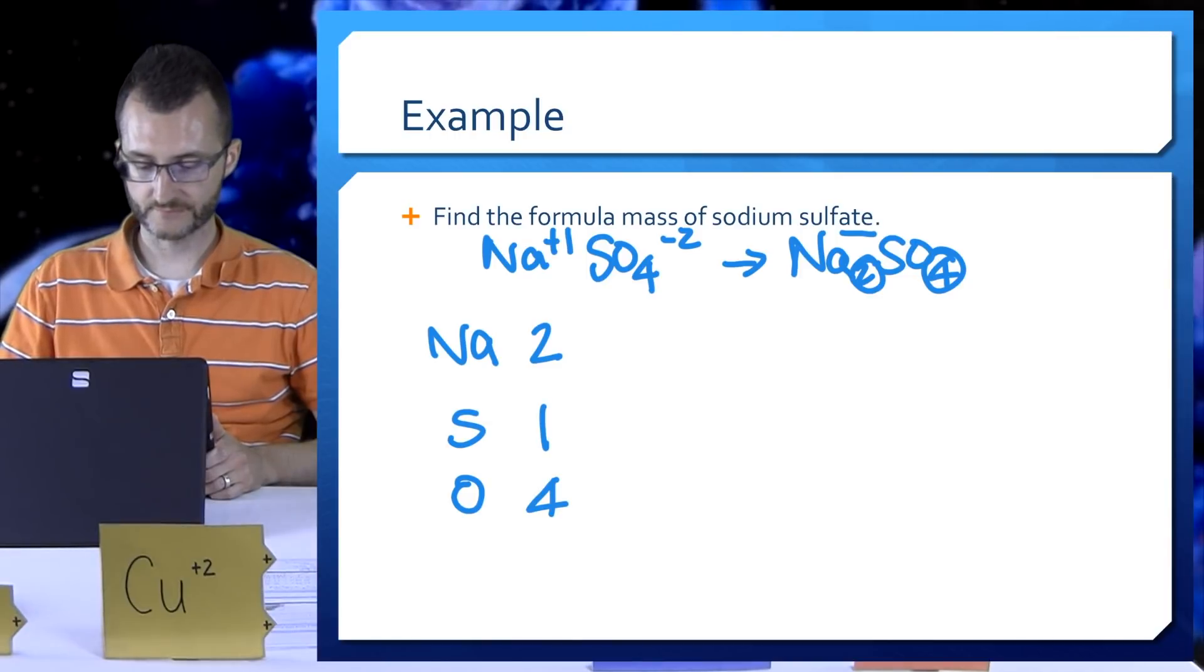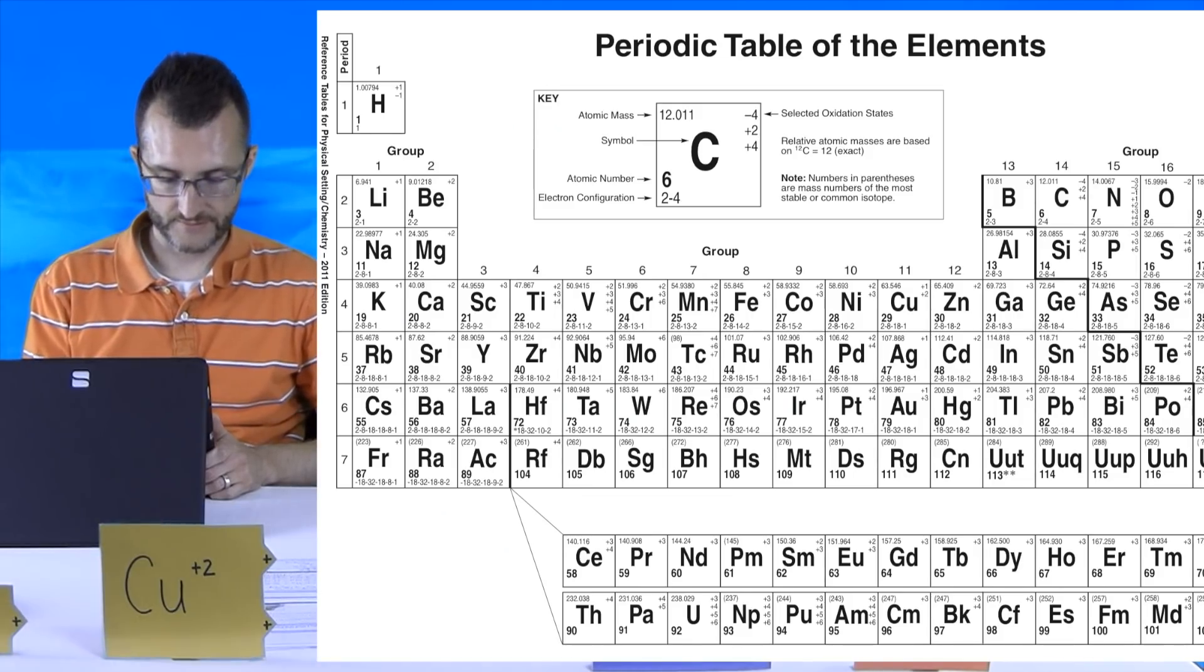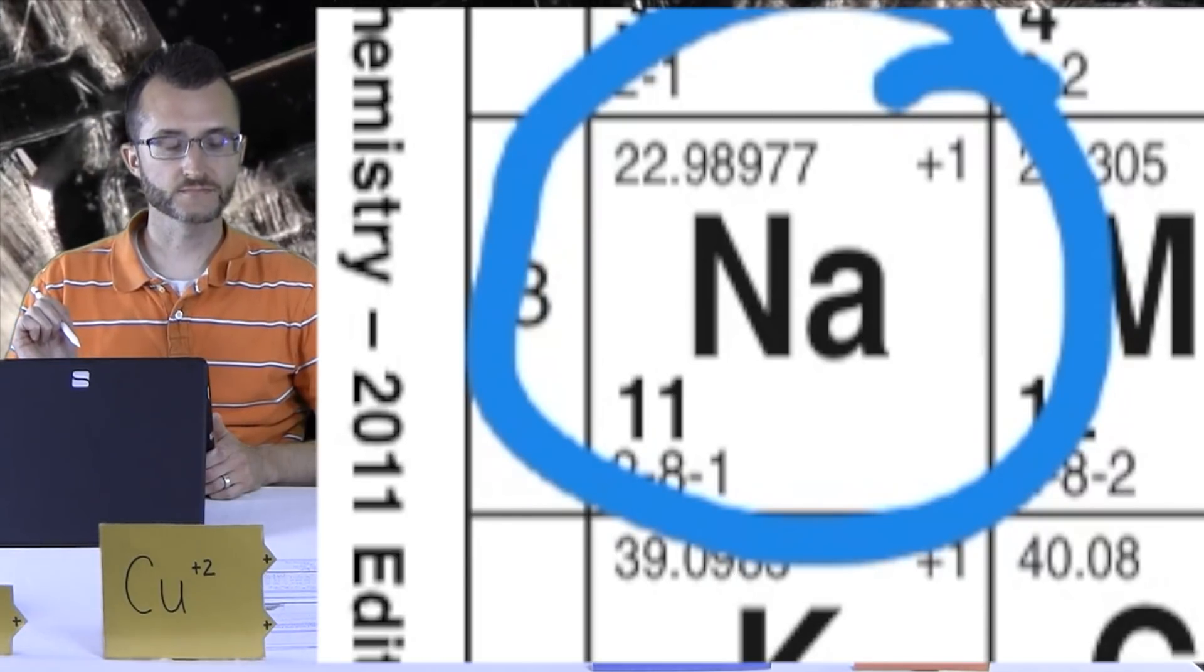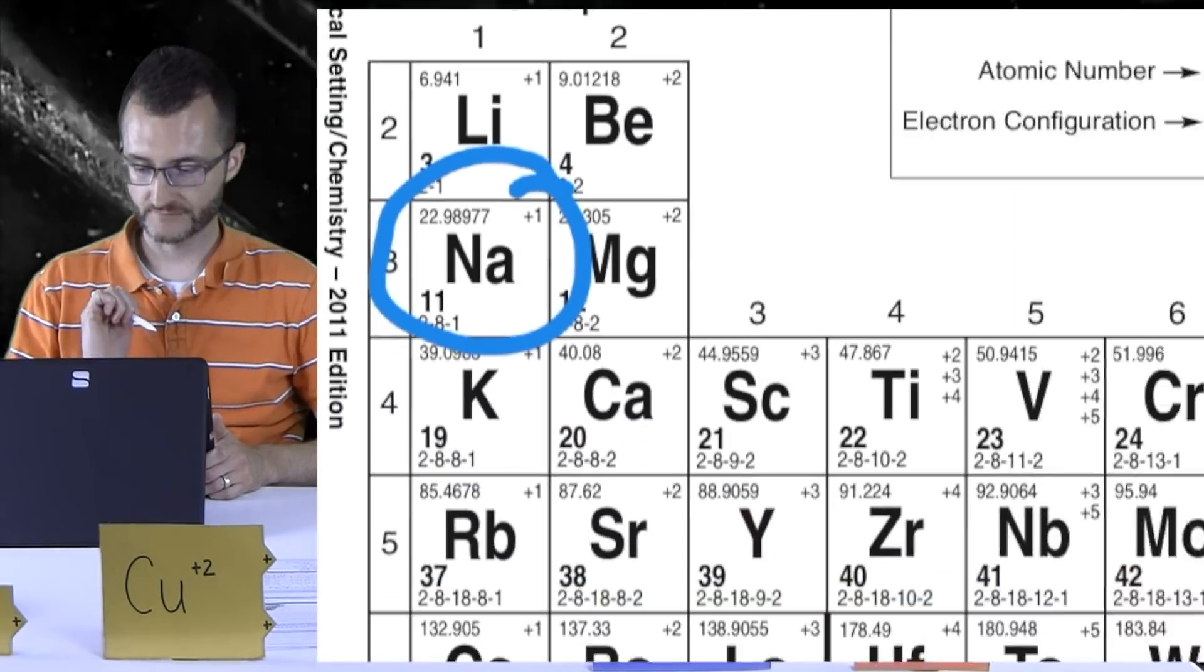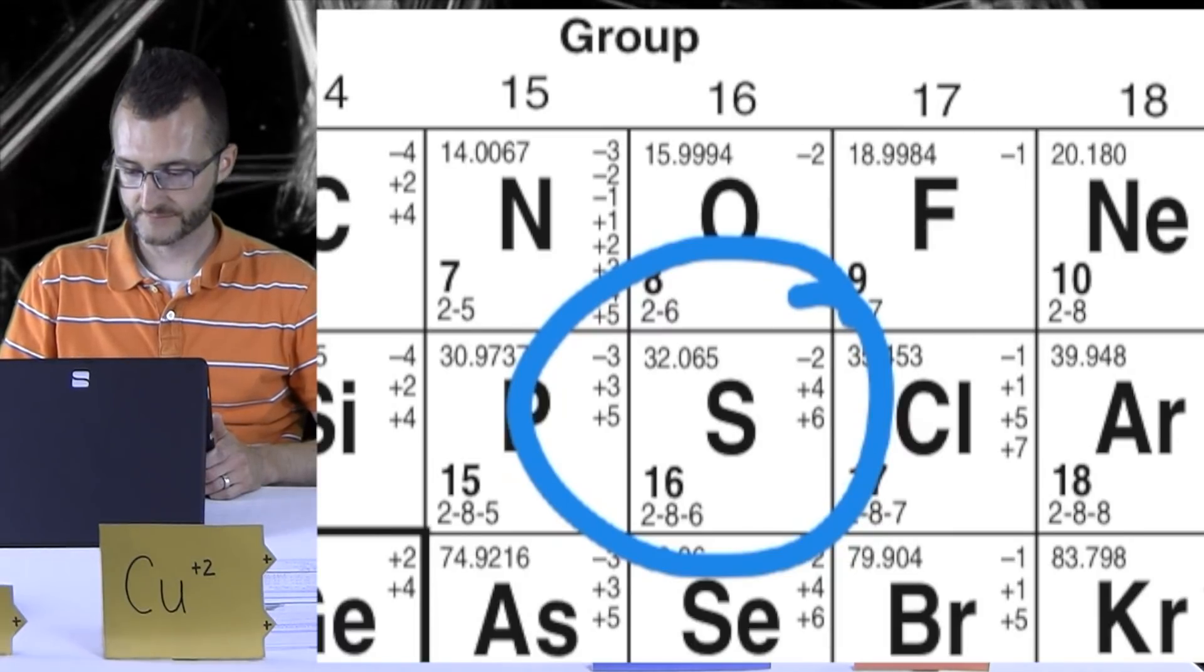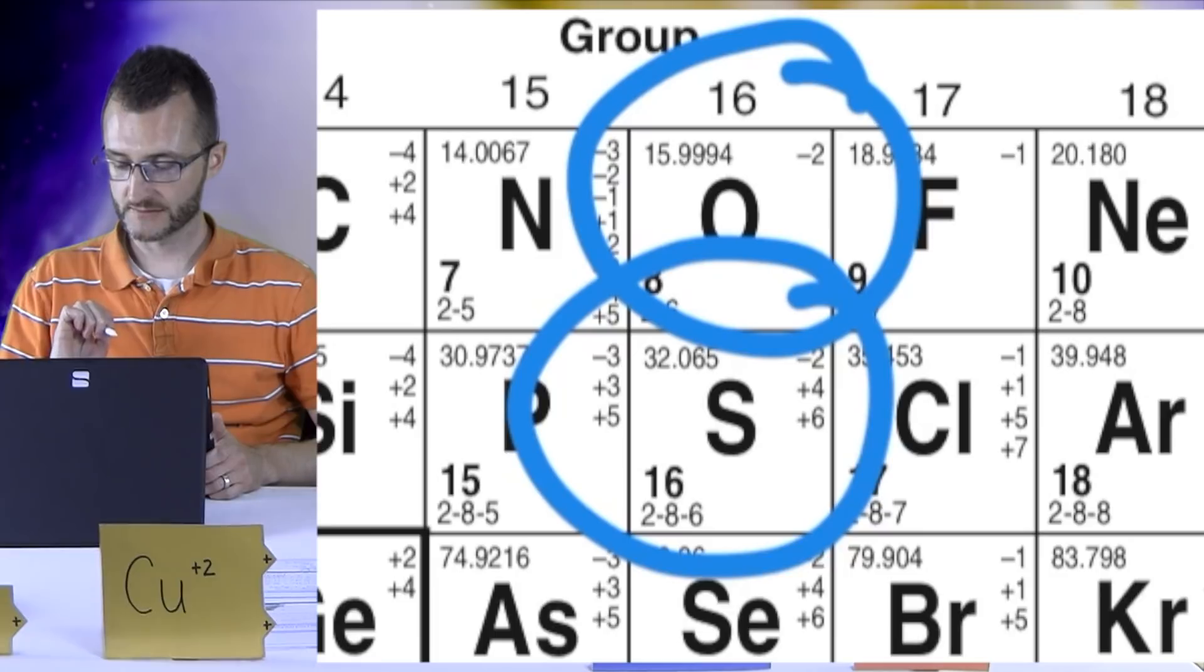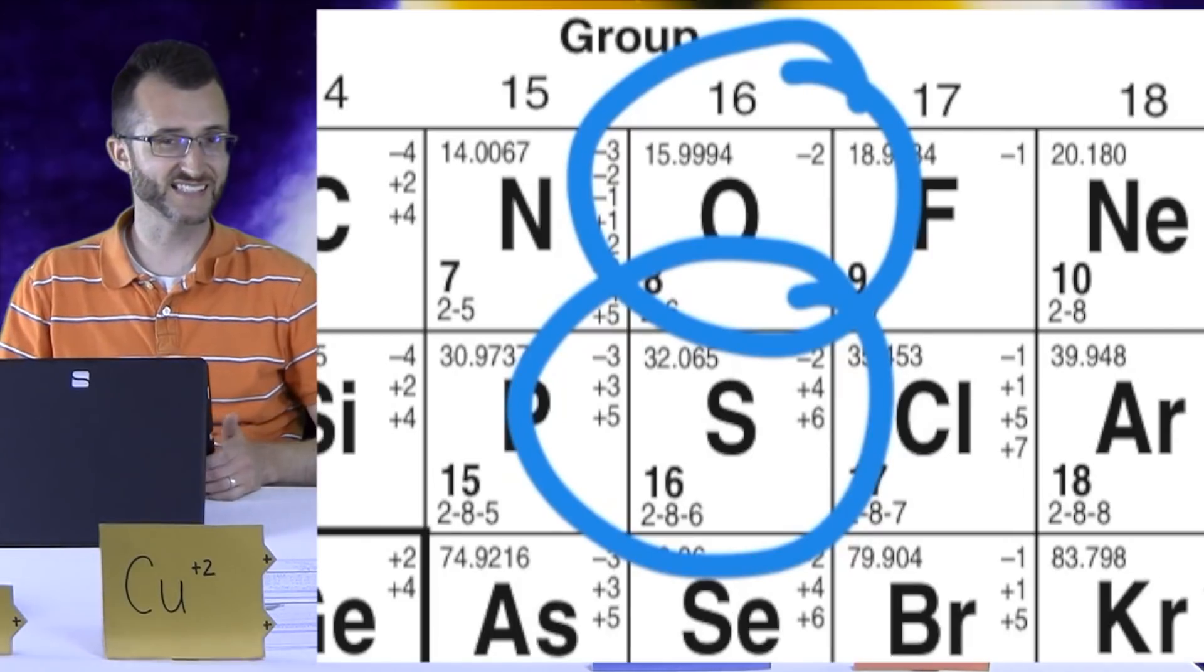Next we're going to have to go to our periodic tables because we need their atomic masses. Let's find sodium. What's its atomic mass? It says 22.98977. Remember in this class you can round to two decimal places to make your life easier. It looks like I can round up so 22.99. Sulfur is 32.065 for its atomic mass. To two decimal places that would also round up so 32.07. And the last one was oxygen, 15.9994. To two decimal places this one rounds up to 16.00.